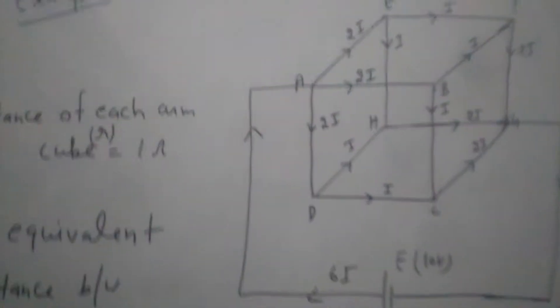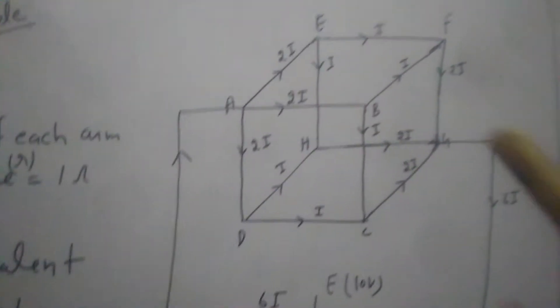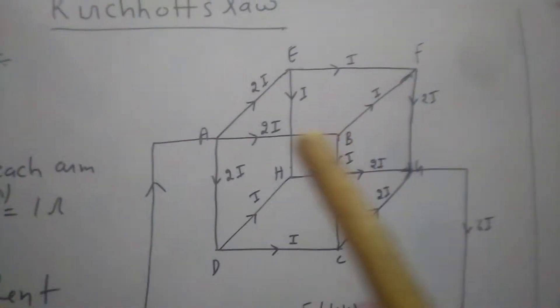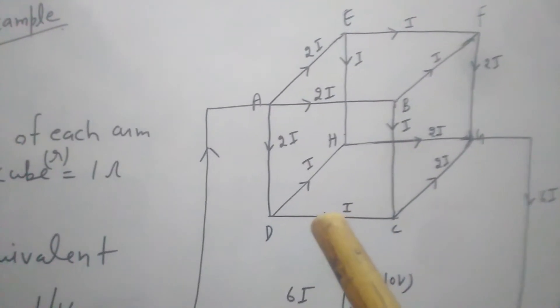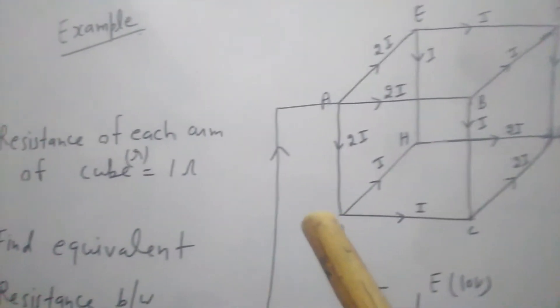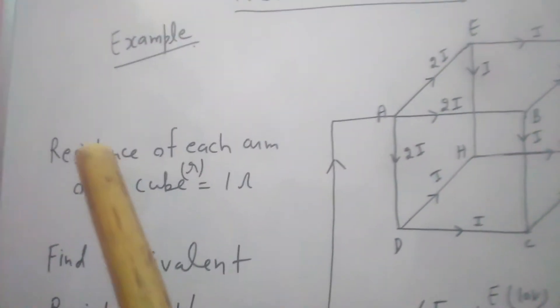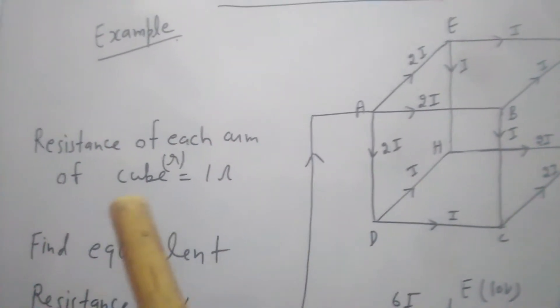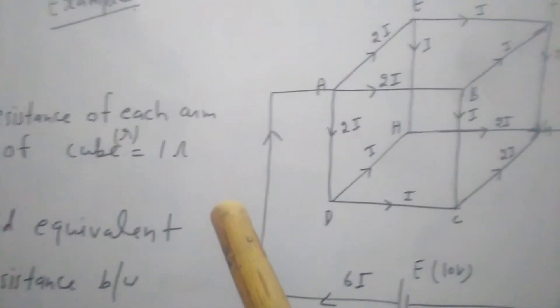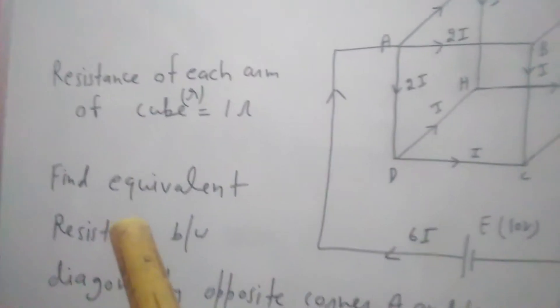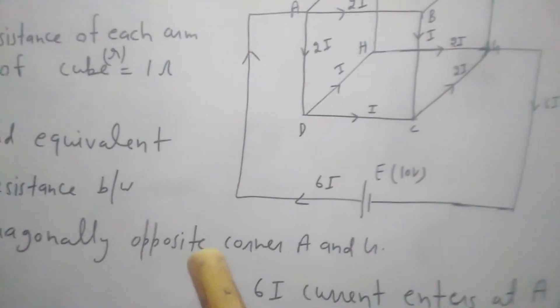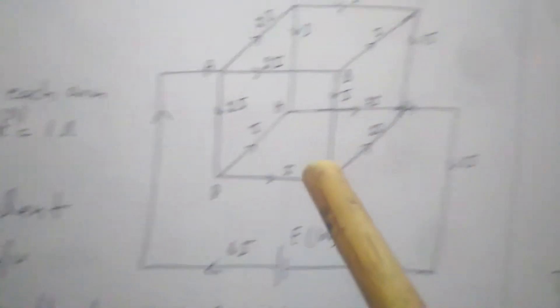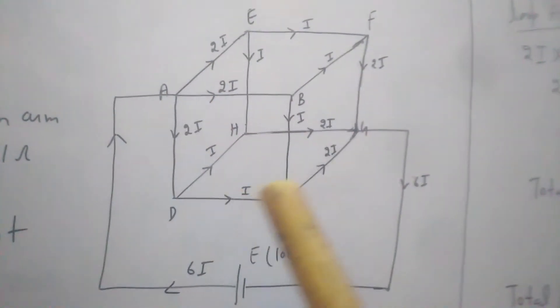So let's consider there is a problem here - a cube is given to you having 12 edges and each edge has resistance 1 ohm. That is, resistance of each arm of cube is 1 ohm given to you, and you have to find equivalent resistance between diagonally opposite corners A and G.